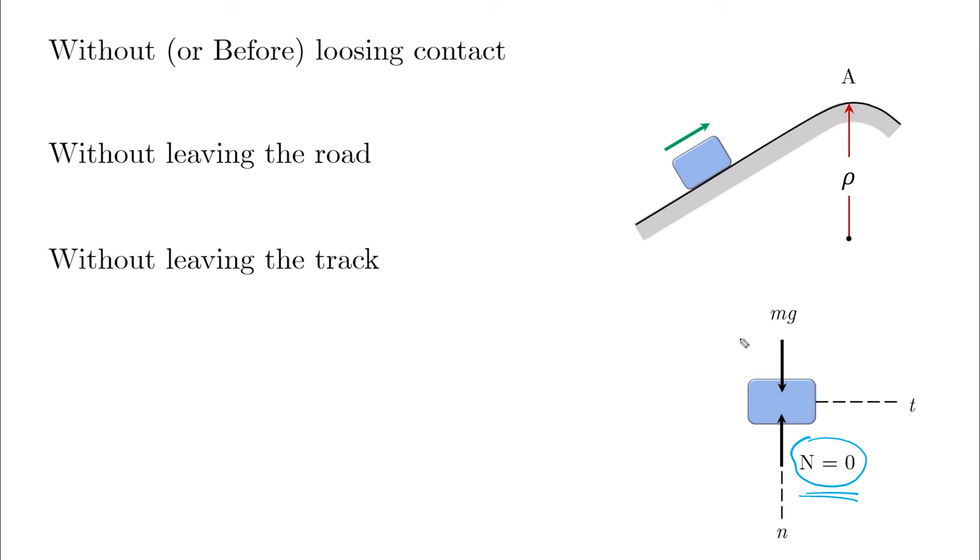We have to apply the summation of forces in the normal direction. And if you can see here, we have mg, and we take n is equal to zero, because the block is barely in contact with the surface. And by doing this, we have mg is equal to m v square over rho, and we can solve for the velocity in this case. It is just a function of rho and the gravity.